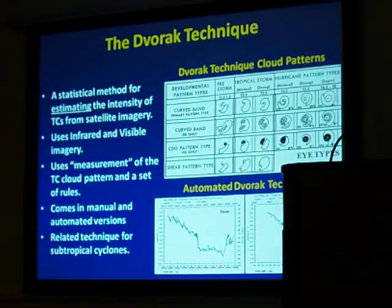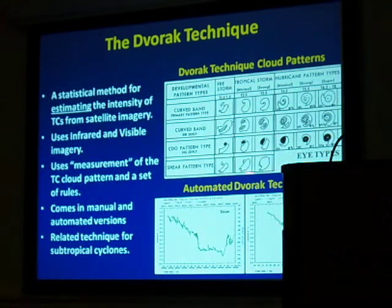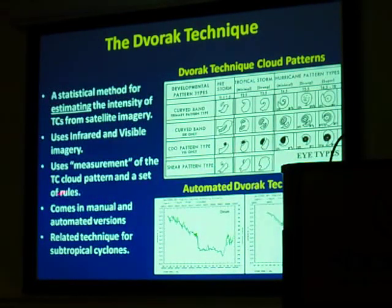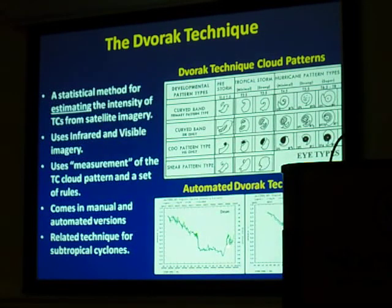This is a subjective method — an analyst is following a hierarchy of rules to arrive at a final T number. We also have automated versions; we've had these working for several years now, but they're not quite up to speed, so we're not ready to have them replace the analyst, and that may not occur right away anyway.